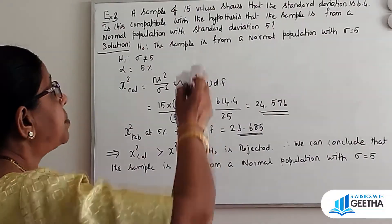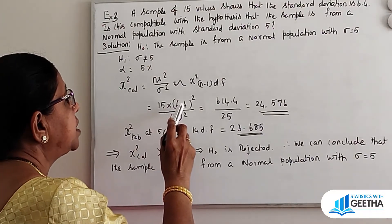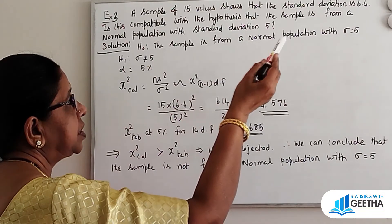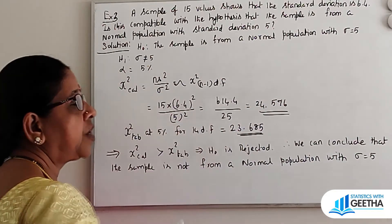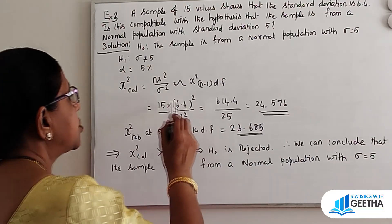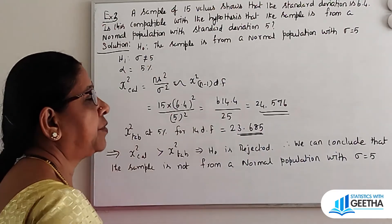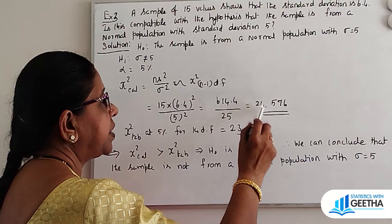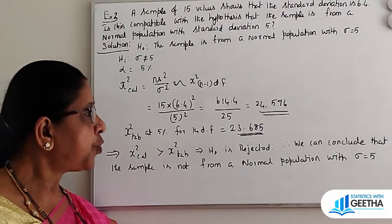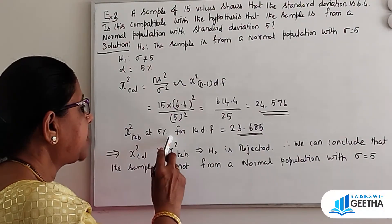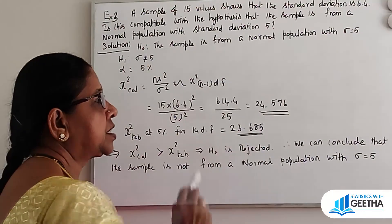The sample size is 15, which is a small sample. S, the sample standard deviation, is 6.4. Sigma naught, the population standard deviation, is 5, so sigma naught square is 25. Chi-square calculated equals n times S square by sigma naught square, which is 14 times 6.4 squared divided by 25. After dividing, we get chi-square calculated value of 24.576. Chi-square table value at 5% for 14 degrees of freedom from chi-square tables is 23.685.